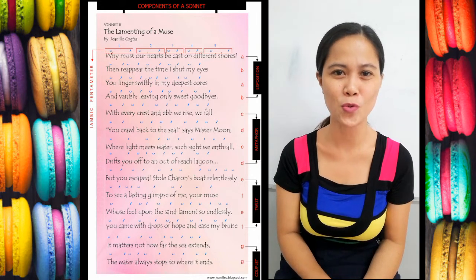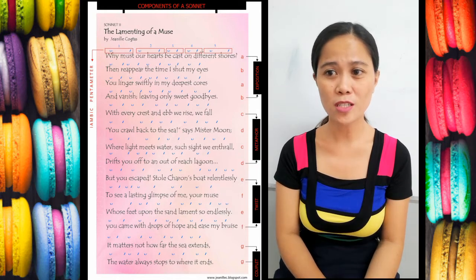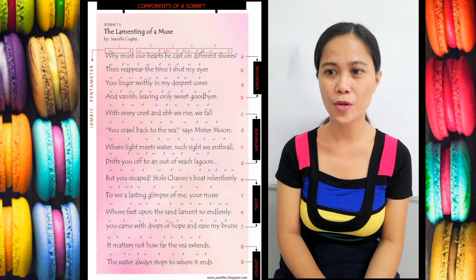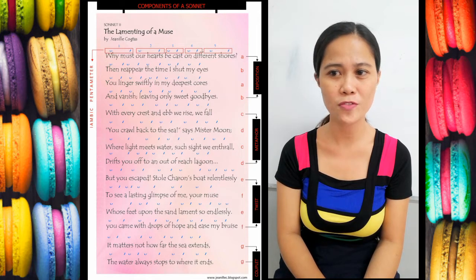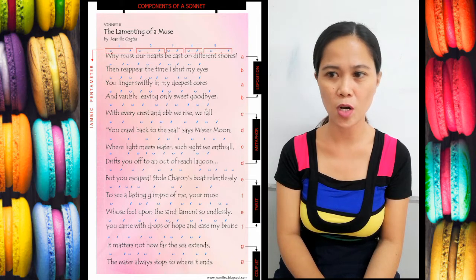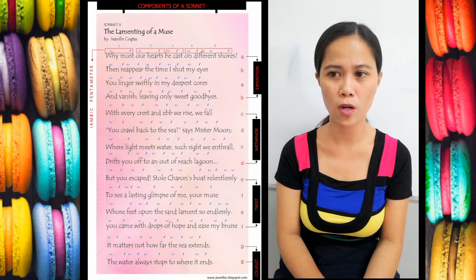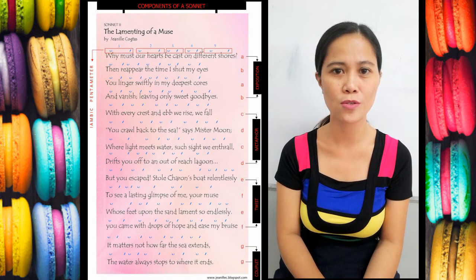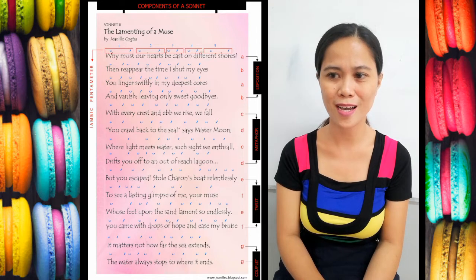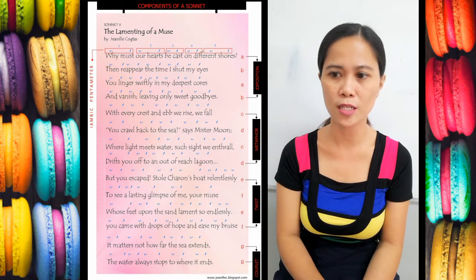'Why must our hearts be cast on different shores, then reappear the time I shut my eyes, you linger swiftly in my deepest course, and vanish leaving only sweet advice. With every crest in air when we rise before, you crawl back to the sea says Mr. Moon, where light meets water such a sight, wind trips you off to an out-of-reach lagoon. But you escaped, stole Charon's boat...'